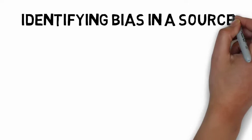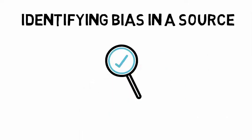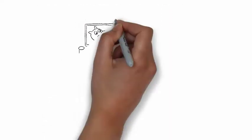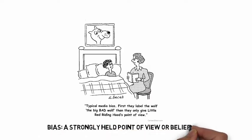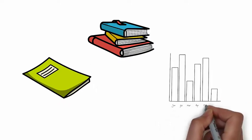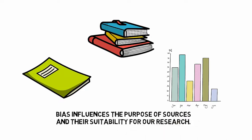Welcome to this video from the Carleton University Library on evaluating the bias in a source using the CRAAP test. We all can have a strongly held point of view or personal belief that greatly influences our thinking on a given topic — this can be considered a bias. When choosing sources for our academic work, it's important that we think critically about the point of view of a given author or organization, because their bias might inform the purpose of their work, and therefore the suitability of that work for our own research.